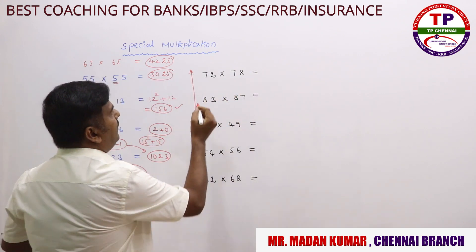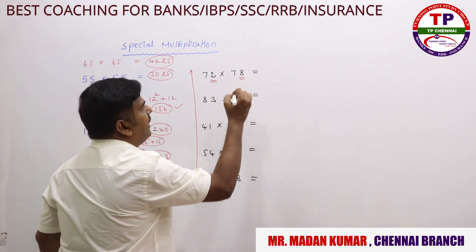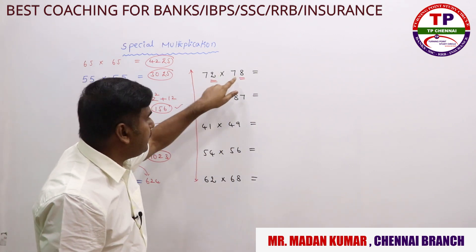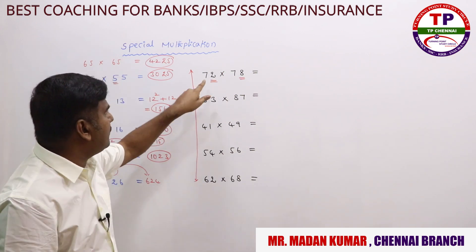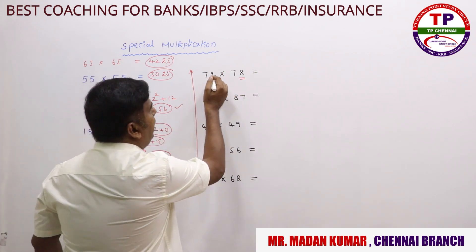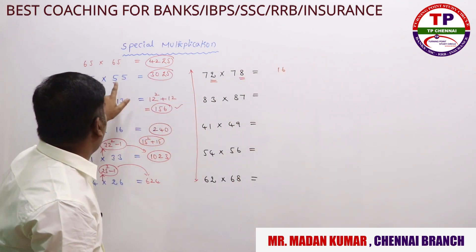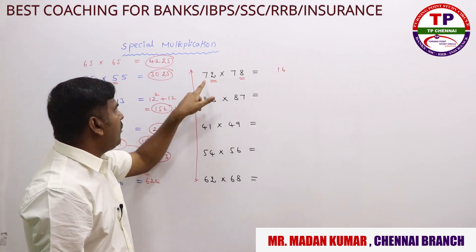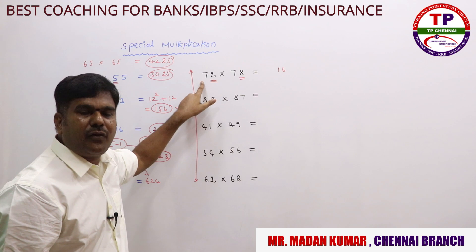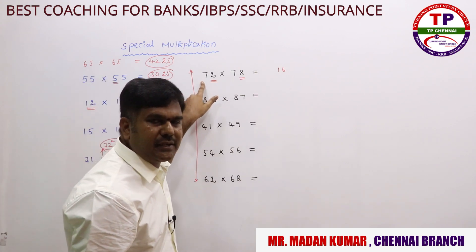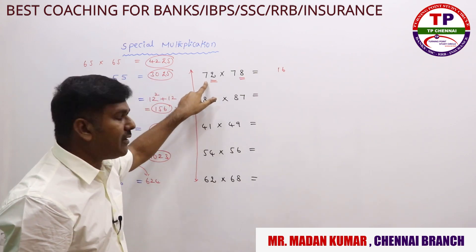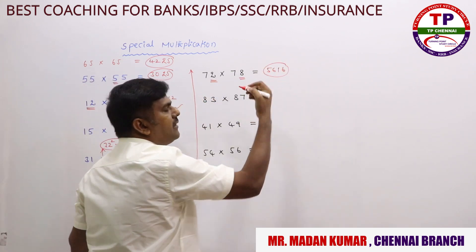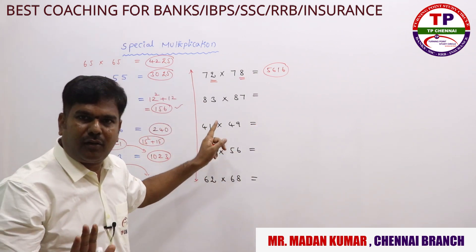For 72×78: the unit digits are 2 and 8, their sum is 10, and the first digit is 7 (same for both). Multiply the unit digits: 8×2 = 16. Then multiply the common first digit 7 by the next consecutive digit 8: 7×8 = 56. So the answer is 5616.